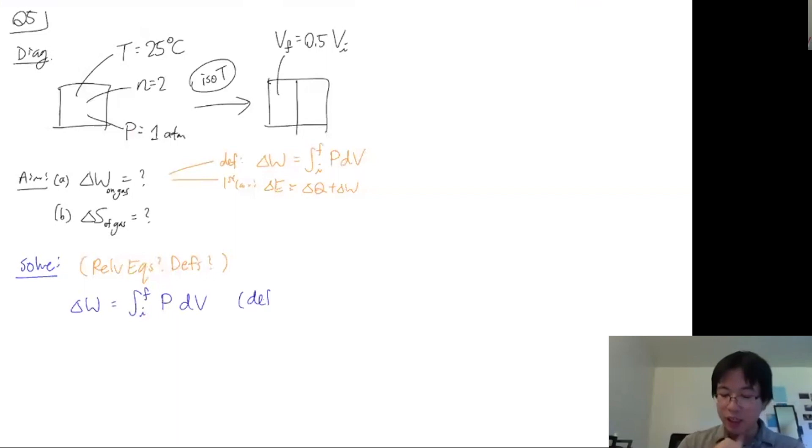So that's what I will start. So W is initial to final of PdV. So that's the definition of the change in work when gas is concerned. And now what next? So I've used a relevant definition. Let's think about what relevant equations can be used to simplify this. We talked about that already, ideal gas law. Maybe that will work.